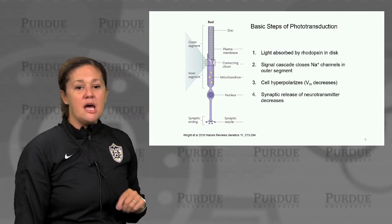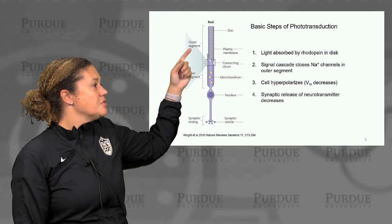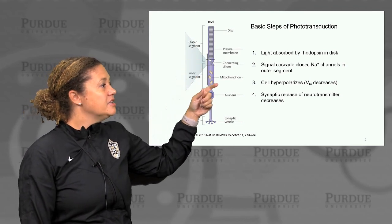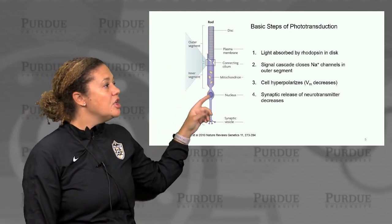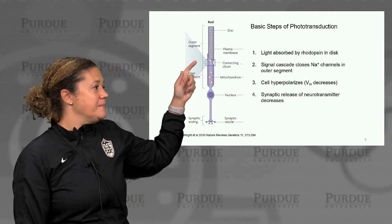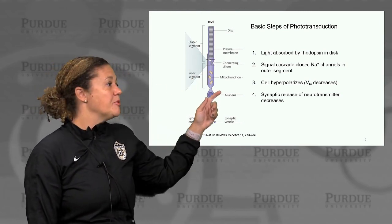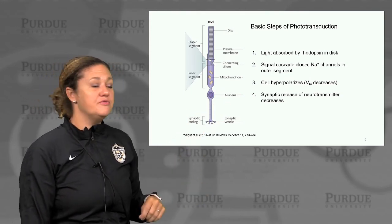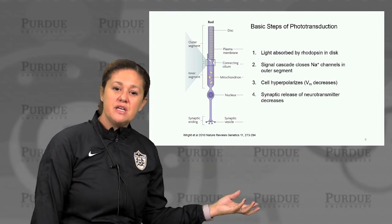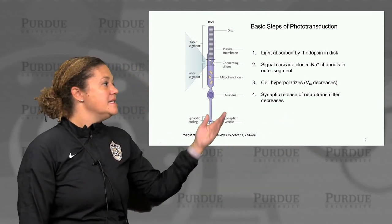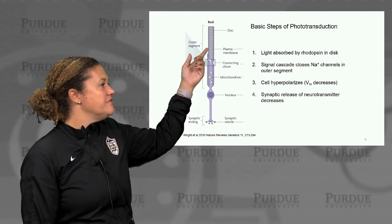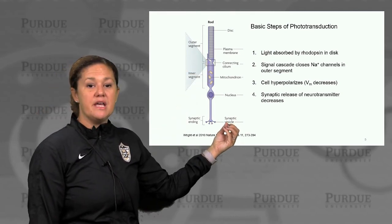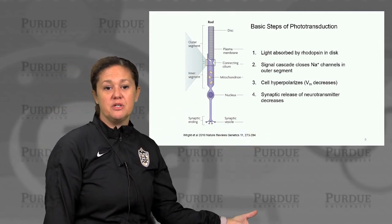The basic steps of phototransduction: light is absorbed by rhodopsin in the protein disk. There's a signaling cascade that closes sodium channels in the outer segment. The cell then hyperpolarizes — the membrane potential of the cell decreases. And then the synaptic release of neurotransmitter to the other cells in the retina, which signal on to the brain, decreases. So we have a change in events from an input — photon absorbed — to the ultimate output of the cell: changes in neurotransmitter release.